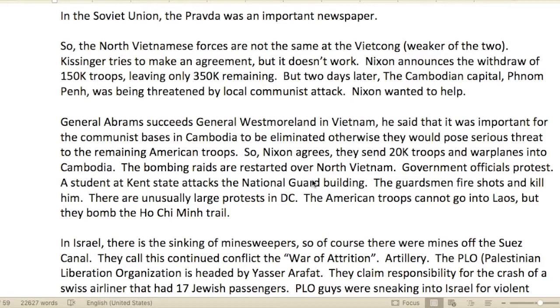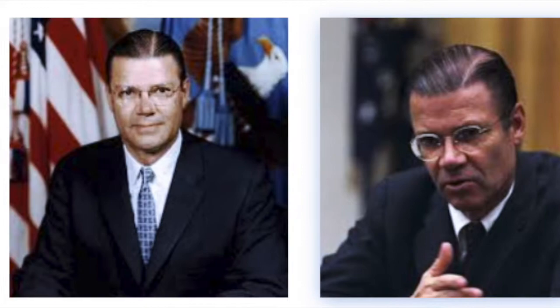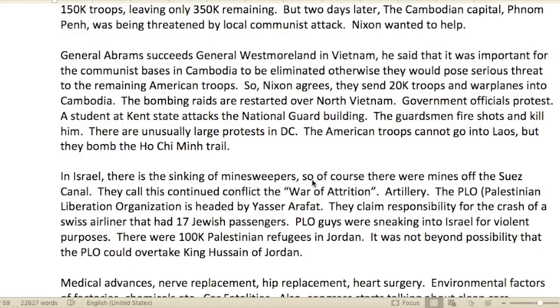The North Vietnamese forces were not the same as the Viet Cong — the Viet Cong were actually the weaker of the two. Kissinger tried to make an agreement but it didn't work. Nixon announced the withdrawal of 150,000 troops, leaving only 350,000 remaining.